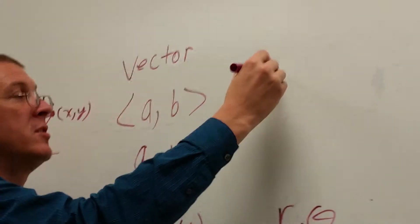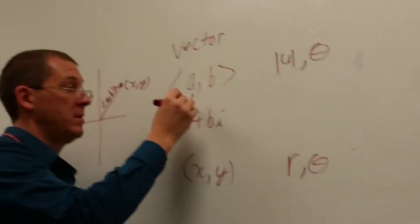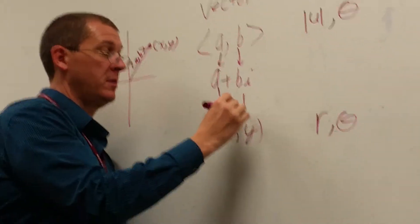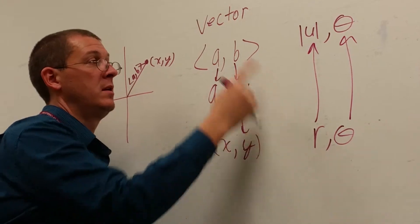Now in vector notation you have magnitude and direction. Just like this is all the same information, that's the same as that. So if you know how to do this, you know how to do this.